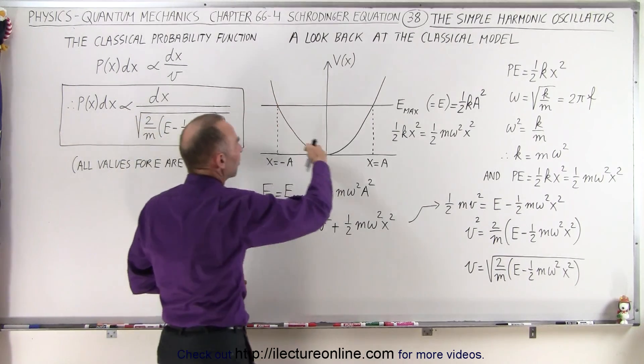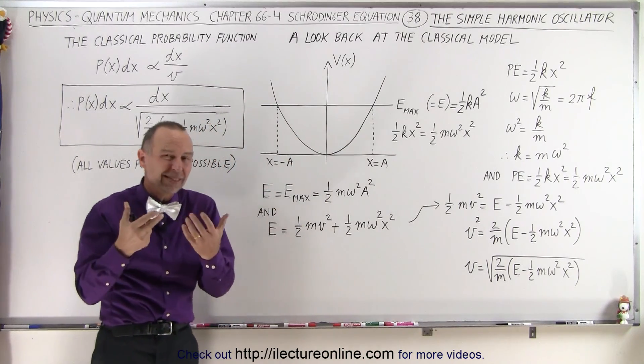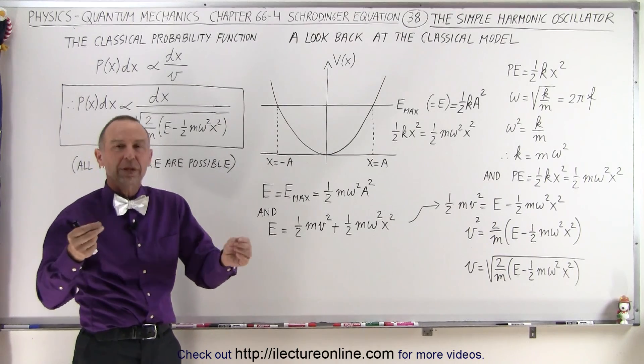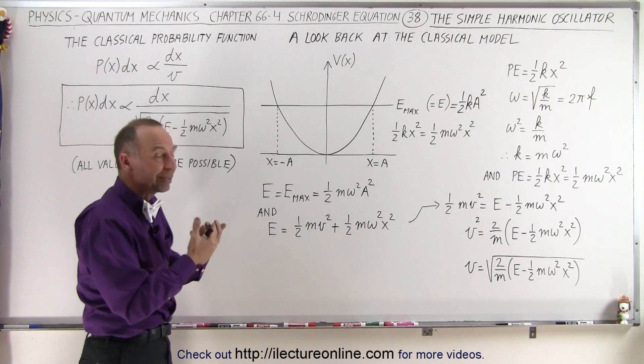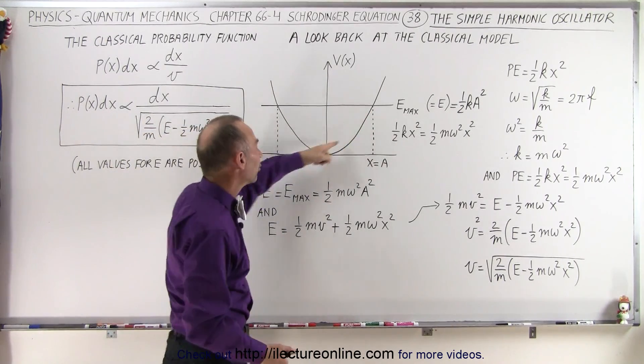So here we have a graph that represents the potential energy of the oscillator. And of course, we can then think of a mass with mass m on a spring with spring constant k oscillating back and forth in such a way that the potential energy of that oscillator can be represented by this graph.